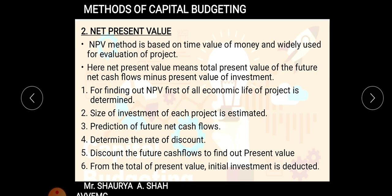The fourth step is determining the rate of discount, which is the cost of capital — in common language, the percentage of decrease in the value of money. For example, if today the value of one rupee is one rupee, next year it may reduce to around 0.90 or 0.95, and in the succeeding year to around 0.85. This reduction in the value is known as the discounting factor.